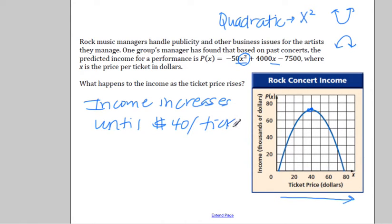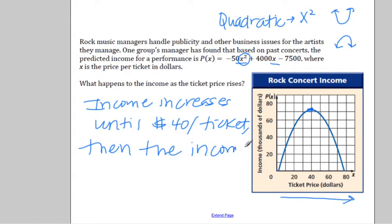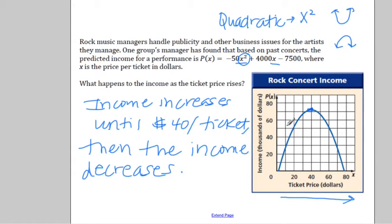Once we get to that $40 and above, the income starts to decrease — then the income decreases. This tells the manager that we want to keep tickets around $40 a ticket to maximize our income.